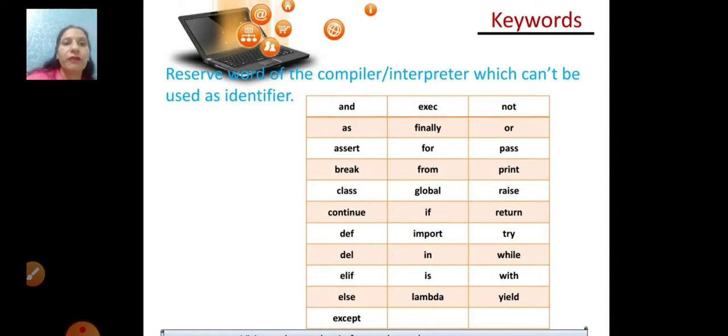Now, keywords. Keywords are the reserved words of the compiler or interpreter which can't be used as an identifier. There are around 33 keywords in Python.